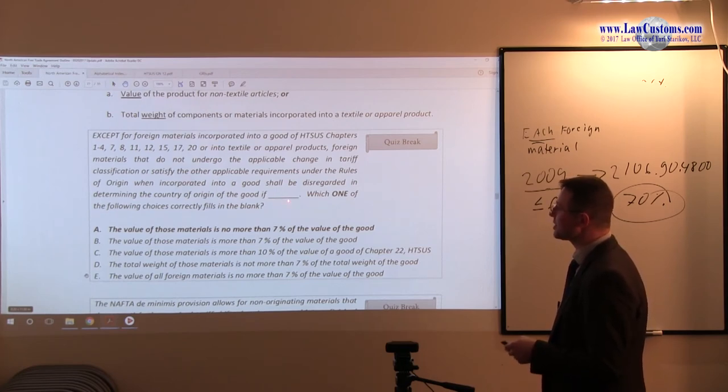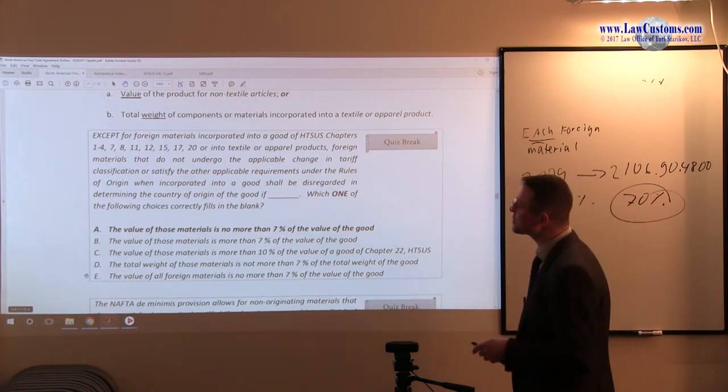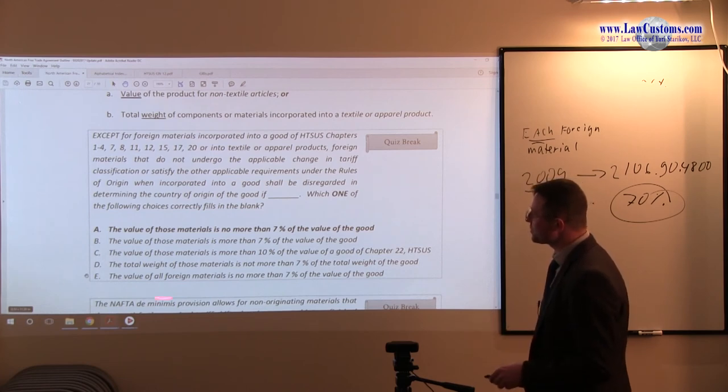But it is not a good continuation of the sentence. Because let's take a look at the sentence again. Except a list exceptions, formatives that do not undergo applicable change in tariff classification when incorporated, the good shall be disregarded. So see, the way customers examiners, the way they are implying that E is not a correct answer is all foreign materials. What if some of the materials do undergo applicable change in tariff classification?